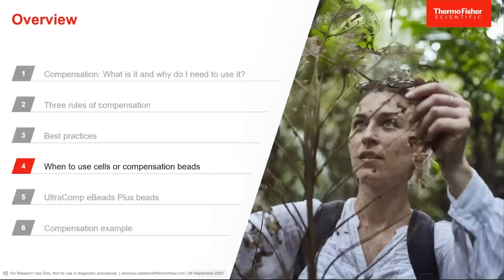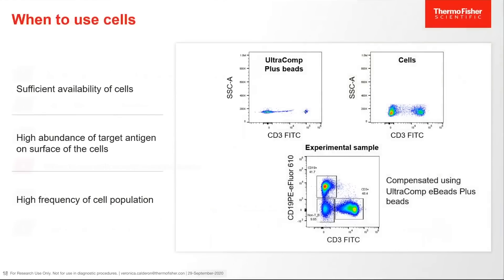When to use cells or compensation beads: use cells when there is a sufficient availability of cells, when there is a high abundance of a target antigen on the surface of the cell, or there is a high frequency of the cell population. The plots on the right show CD3 FITC antibody stained on Ultracomp eBeads Plus or on cells. There is a clear separation of the negative and positive populations on either the beads or the cells. In this case, cells would be sufficient when running compensation.